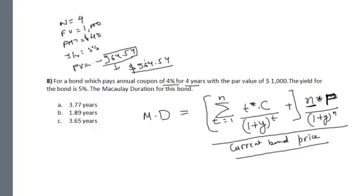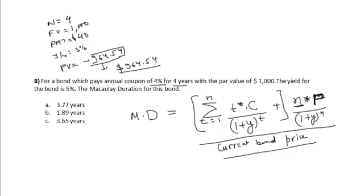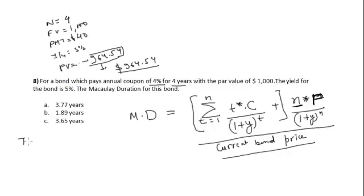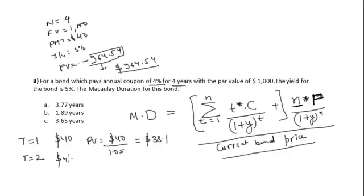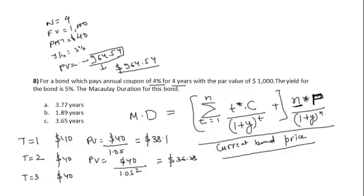Now let us take all the payments one by one. At t equals 1, the payment received is $40, and its present value is $40 divided by 1.05, which equals $38.10. At t equals 2, the coupon payment is $40, and its present value is $40 divided by 1.05 squared, which equals $36.28.